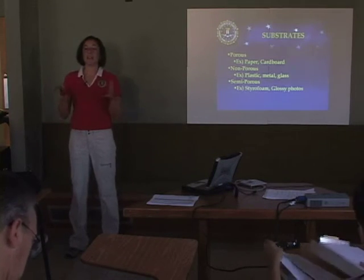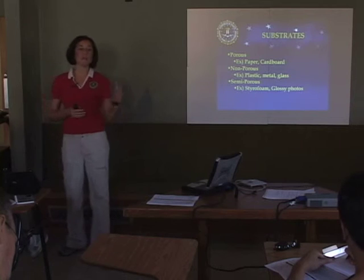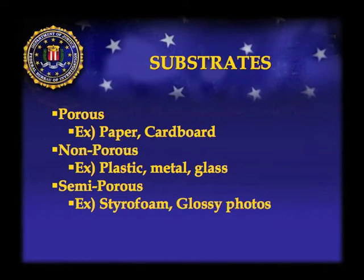Substrates: depending on the type of evidence, that will determine what processes we use. There are two main types: porous and non-porous. Semi-porous evidence is essentially a combination of the two. Porous evidence would include paper, cardboard, anything of that nature. Non-porous would be plastics, glass, metal, anything like that. Semi-porous — styrofoam is the best example — also glossy photos and magazine pages, anything that's not quite paper but not quite plastic where you can't penetrate into the surface.